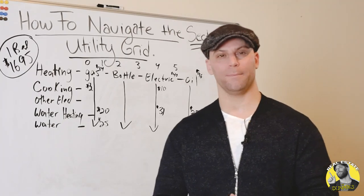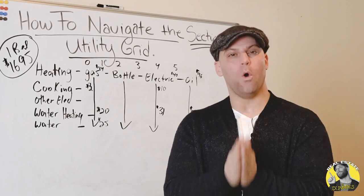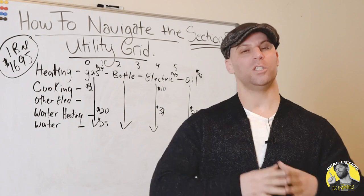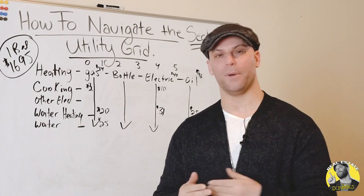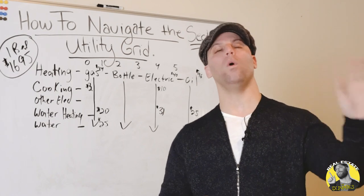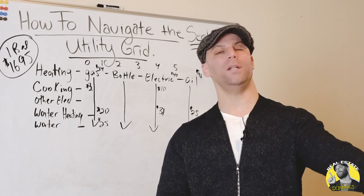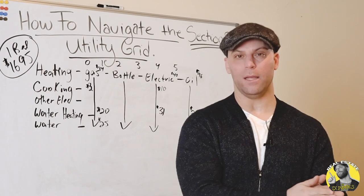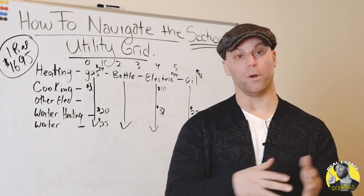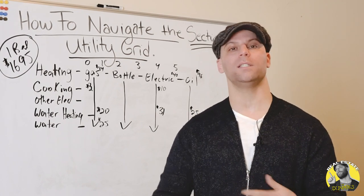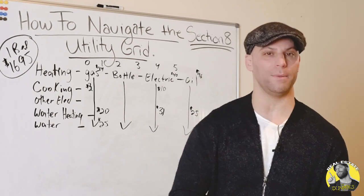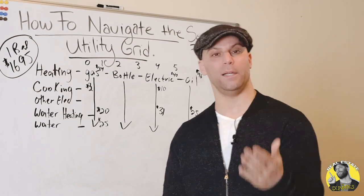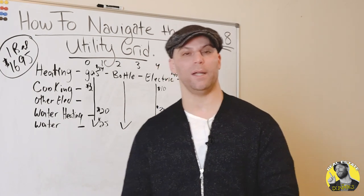First and most important — always, always, always try to sub-meter the property. It's better for you to take less money and have the tenants pay all their own utilities, because this way they're not gonna crank up the heat, they're not gonna let the water run, and ultimately waste your money.